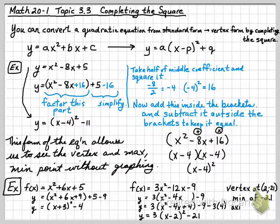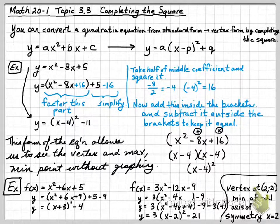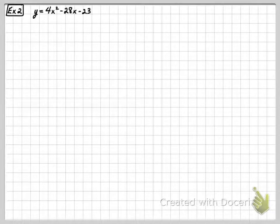This tells us the vertex is at (2, negative 21). It also tells us there's a minimum of negative 21 because the graph opens upward since a is positive 3, and there's an axis of symmetry at x equals 2. In Example 2, y equals 4x squared minus 28x minus 23. The instruction is to put it into vertex form.